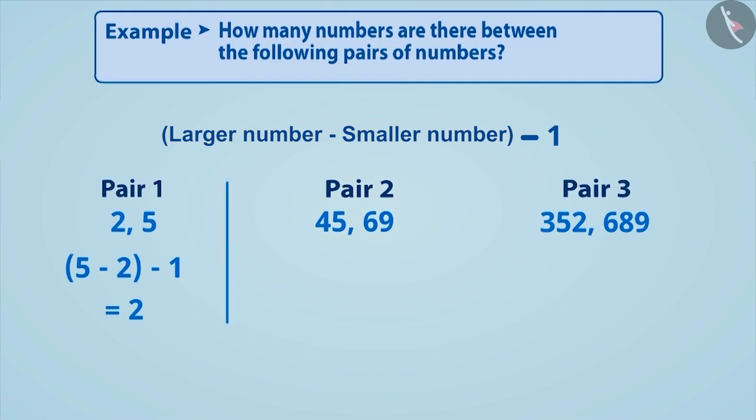Similarly, to find the whole numbers between 45 and 69, we will find the solution of 69 minus 45 minus 1. After finding the solution, we can say that there are 23 whole numbers between these two numbers.